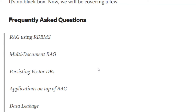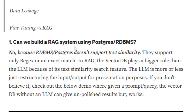Starting off: can we build a RAG system using PostgreSQL or RDBMS? A big no, because RDBMS and PostgreSQL don't support text similarity. As you may know from my previous videos, the important component of RAG is the vector DB, which is able to store embeddings for the text alongside the text itself, and hence supports text similarity. If you give it a query, it can search for similar sentences — not exact matches — and return results. This is not the case with RDBMS.